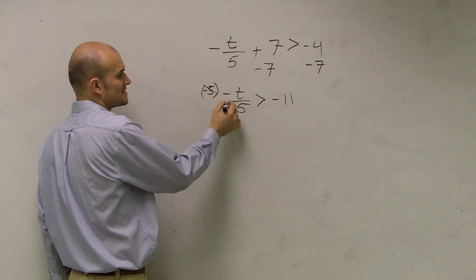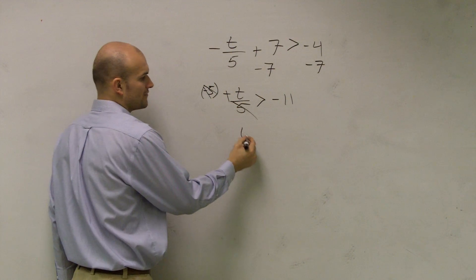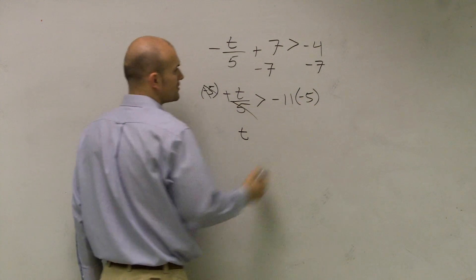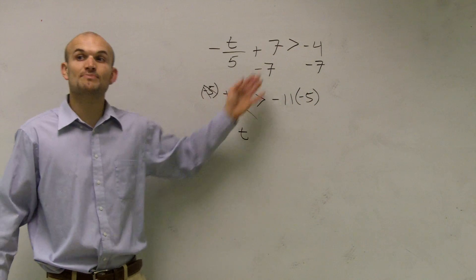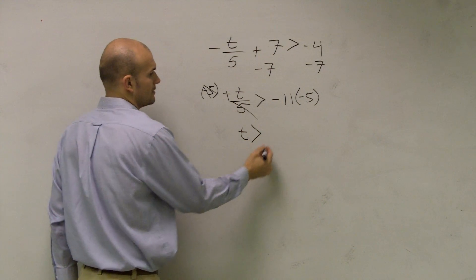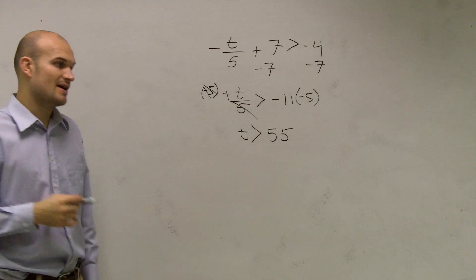What's going to happen is the 5s will cancel out and the negatives will turn to a positive. So therefore I'll have t. However, I'm going to multiply by a negative 5 on both sides. So since I'm multiplying by a negative number now, I have to flip my sign. So now I have t is greater than 55.